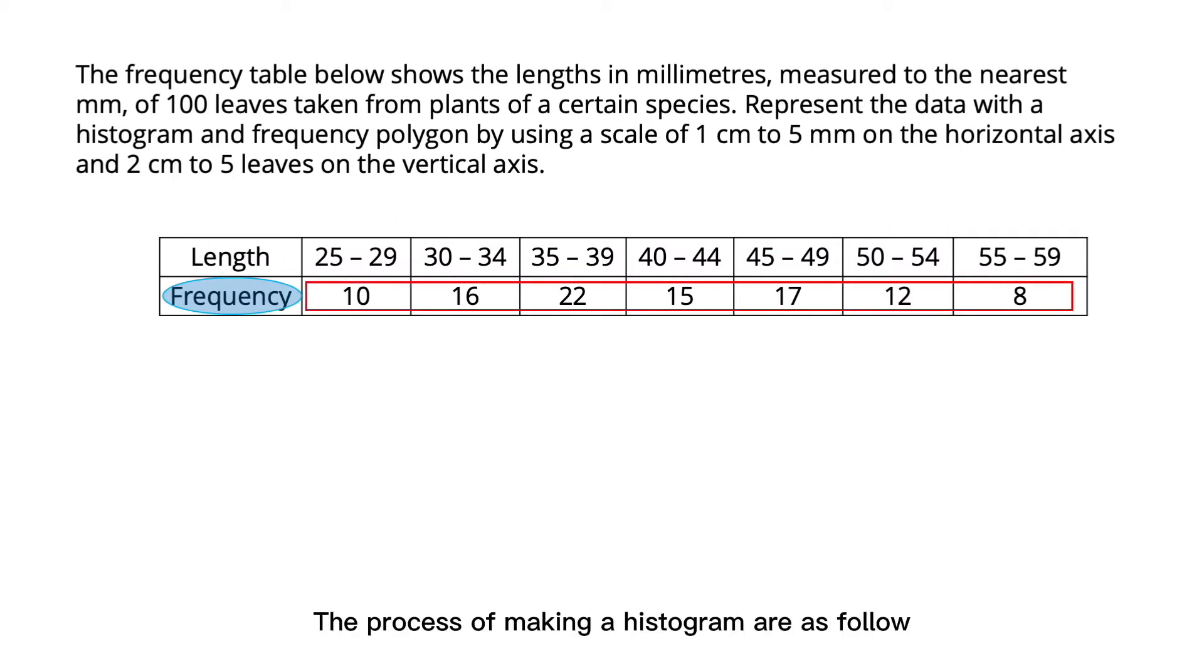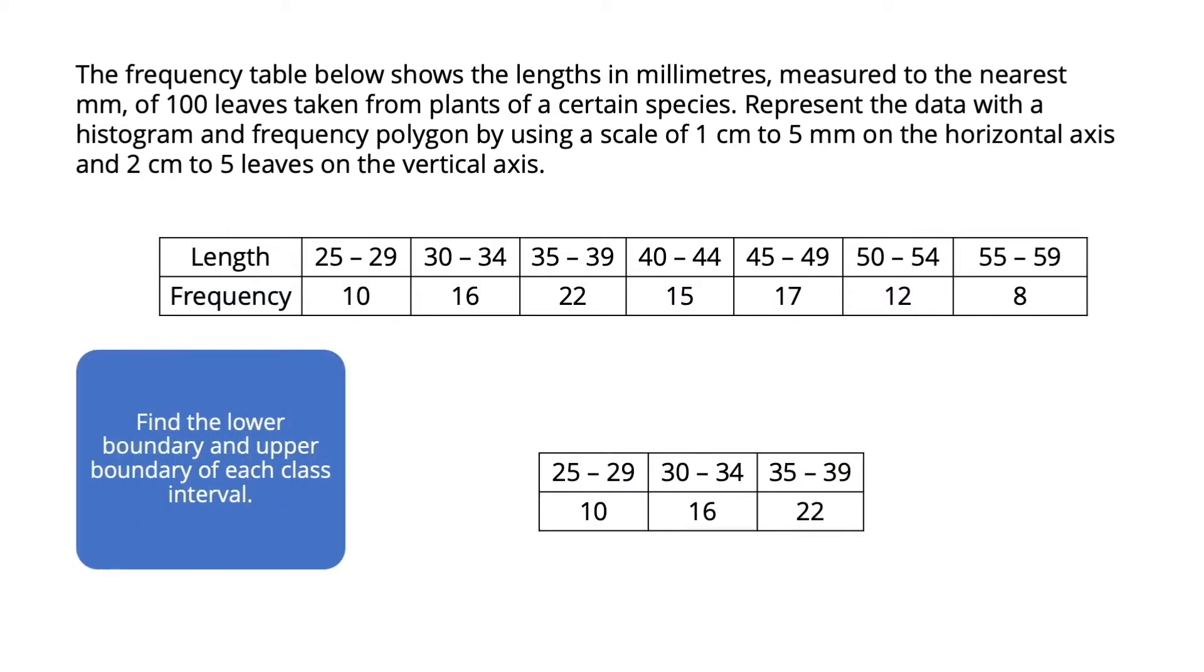The process of making a histogram is explored. Step 1: find the lower boundary and upper boundary of each class interval. The lower boundary of the class interval 30 to 34 is the midpoint of 29 and 30. That is 29 plus 30 divided by 2. We have 29.5. 29.5 is the lower boundary for the class 30 to 34, and it will also be the upper boundary for the class 25 to 29.